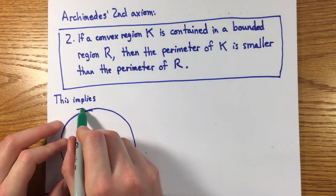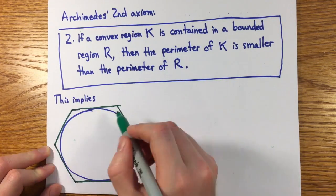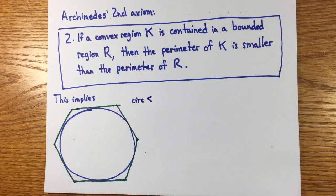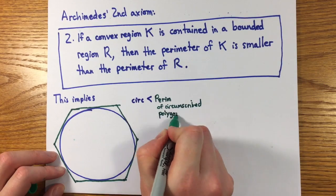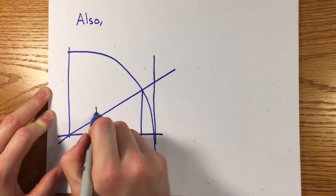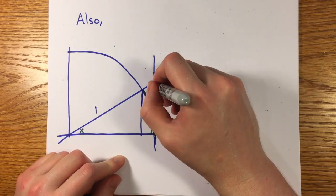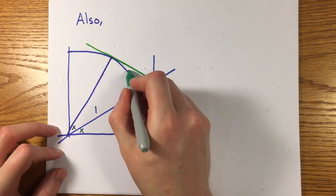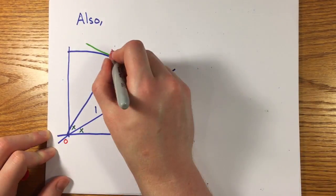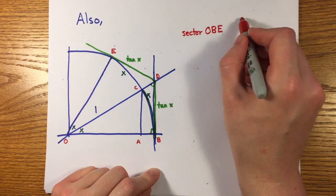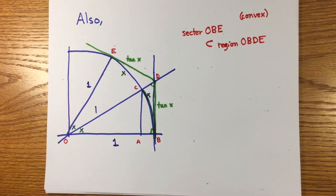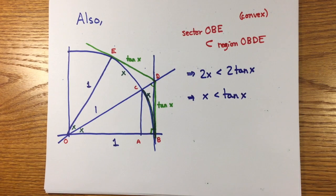This will hold even if r is not convex. The region inside a circle is certainly convex, so according to this axiom, its circumference will be smaller than the perimeter of any circumscribed polygon. Here's a diagram that shows how we can derive from this result that for small positive angles x, x is less than tangent of x, since the sector OBE is convex and contained in the quadrilateral OBDE.